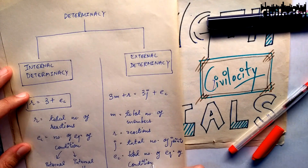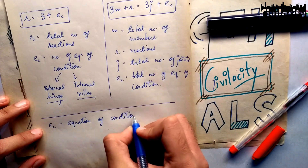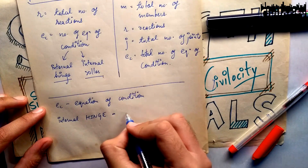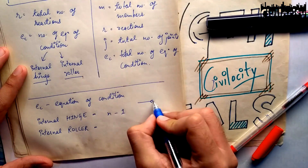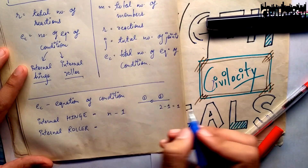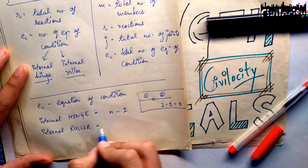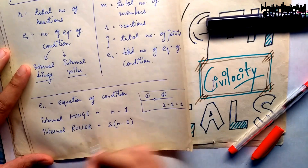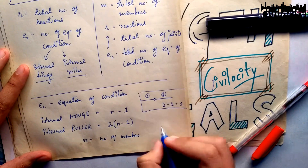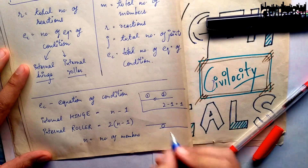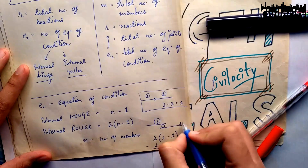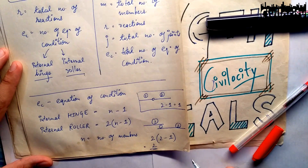The equation of condition EC applies when we have an internal hinge or internal roller present. For an internal hinge, EC = N - 1, where N is the number of members connected to that hinge. For example, if two members are connected to an internal hinge, EC = 1. Similarly for an internal roller, EC = N - 1, so if two members are connected, EC = 1.